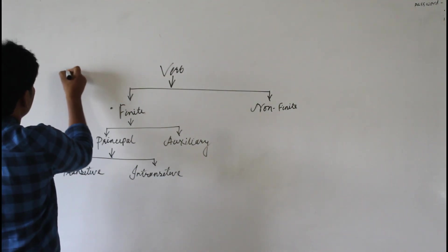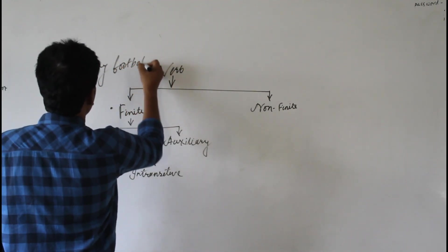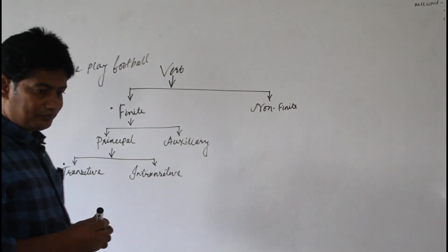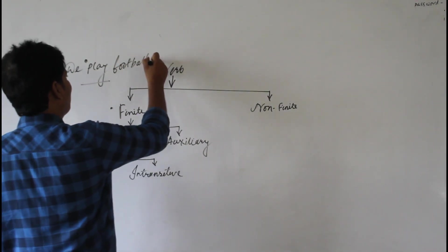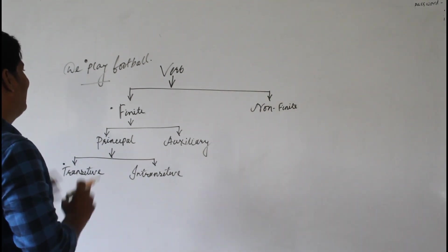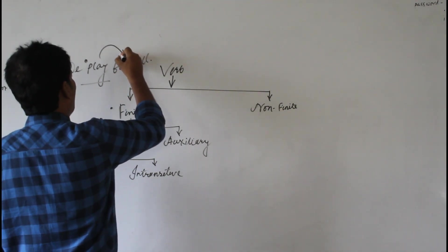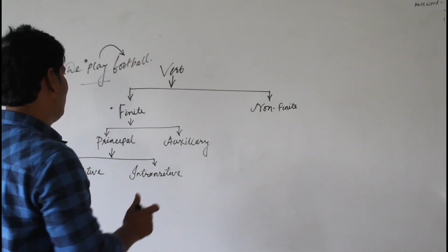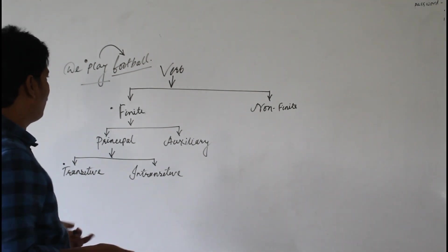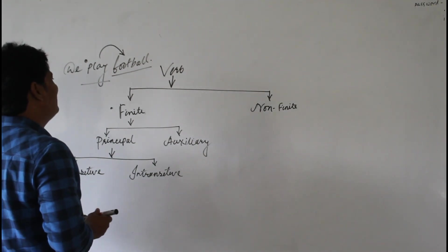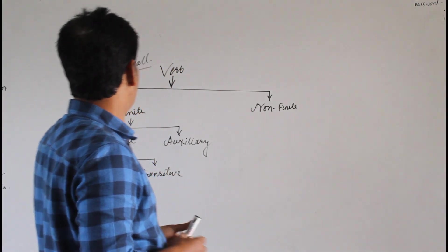Like: we play football. This very verb 'play' is a transitive verb. Why is it transitive? This verb 'play' expresses its meaning depending upon a word after it — a noun, of course it is noun — 'football.' And here 'football' is undoubtedly an object. So the verb which expresses its meaning based upon the object next to it is a transitive verb.